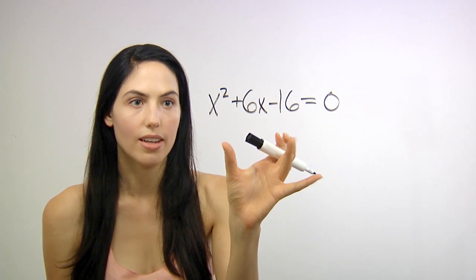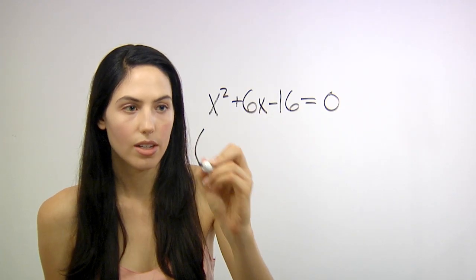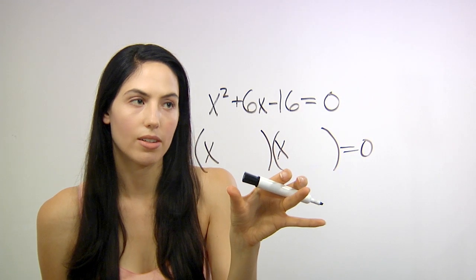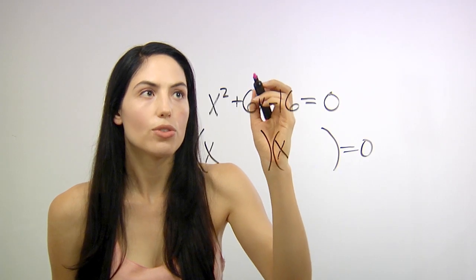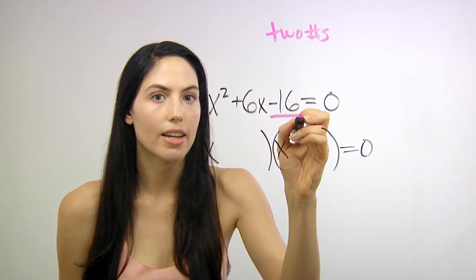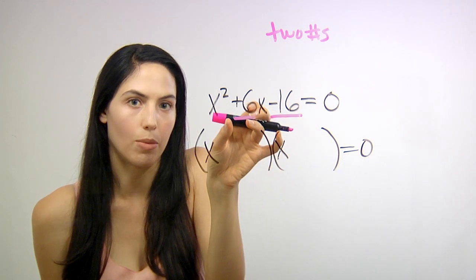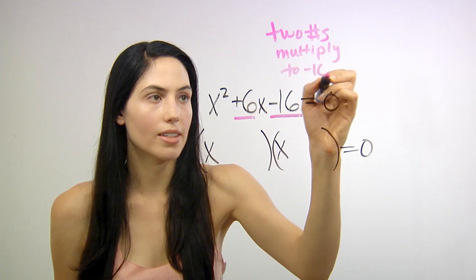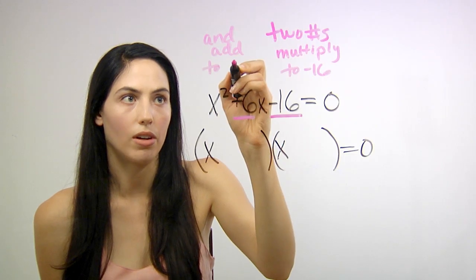Say you have this quadratic equation that starts with x squared, and you need to solve it by factoring. So what you want is two factors, each starting with x, that multiply to your expression and equal zero. What you need to do to factor is find two numbers that multiply to negative 16 — your last number — and add to positive 6, your middle number.